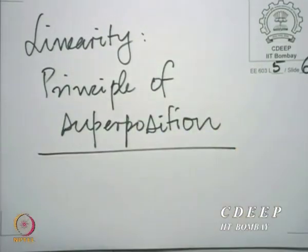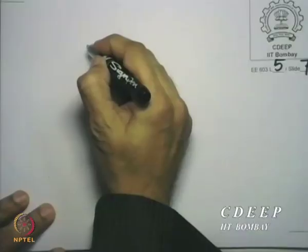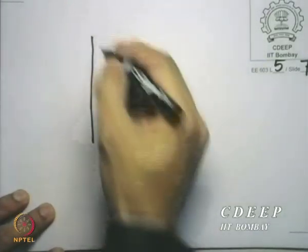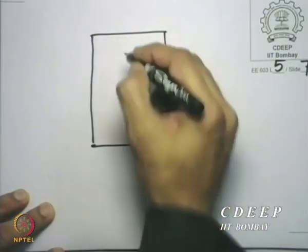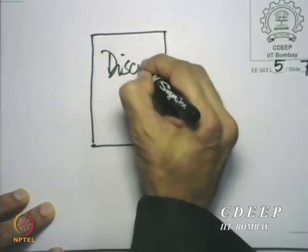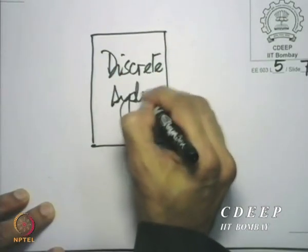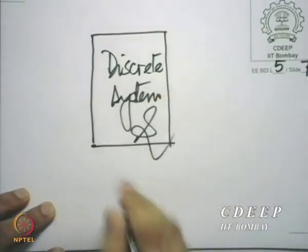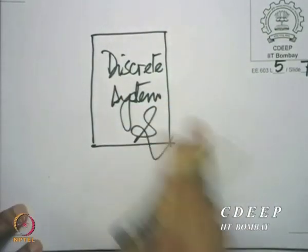Literally, the word superposition means putting one on top of the other — to superpose. When I superpose one upon another, I am putting one on top of the other. The mathematical meaning of superposition is the following. Here again, I conceive of three experiments, and I am more abstract now. I have this discrete system, which I shall denote by script S, as I have done here.